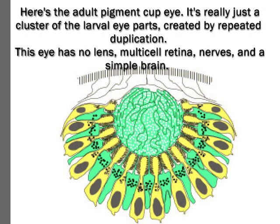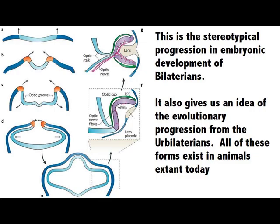Here's the adult pigment eye. It's really just a cluster of the larval eye parts created by repeated duplication. This eye has no lens, a multicellular retina, nerves, and a simple brain. This is the stereotypical progression in embryonic development in bilaterians, and it also gives us an idea of the evolutionary progression from the ur-bilaterians. All of these forms exist in animals extant today.